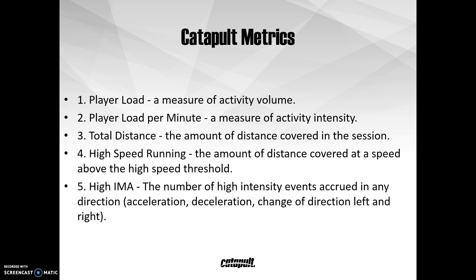These are the metrics we'll be using today. We'll be looking at player load as a measure of activity volume. Player load per minute is player load controlled for time, so that will be a measure of activity intensity. Total distance is just the amount of distance covered in the session. High speed running is the amount of distance covered above a certain speed threshold that we can set. And high IMA is a combination of all the high intensity events accrued in any direction — high intensity accelerations, decelerations, and any changes of direction.